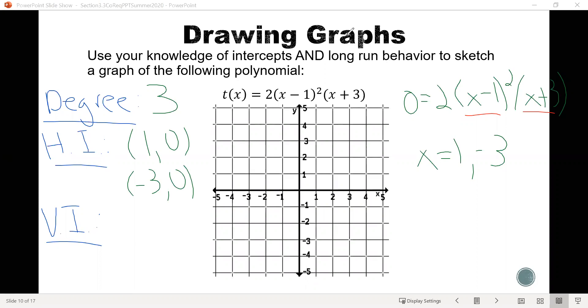And if I think about the multiplicities for the 1, 0, well, there's a power of 2 here. So that's a multiplicity of 2. The negative 3 comes from this one, which says power 1. So that's a multiplicity of 1.